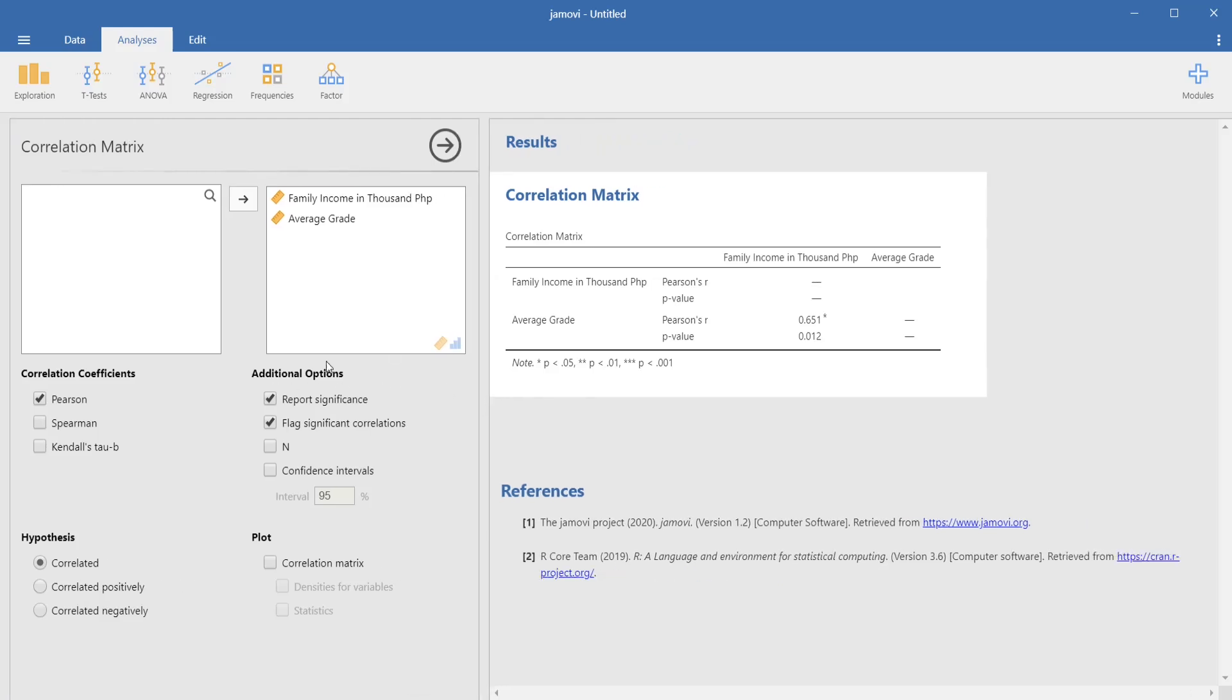Now, looking at the results, we can see to interpret this, we must find where the two variables intersect. We can find family income here, the first variable. It intersects with average grade here. This would be the R or the coefficient of correlation. And we can see that it doesn't have a negative sign. So, this is positive. And the value is 0.65, which means that this is a strong correlation. Other than that, you can see an asterisk here. Meaning our correlation analysis is significant. So, now, we are ready to interpret our results.